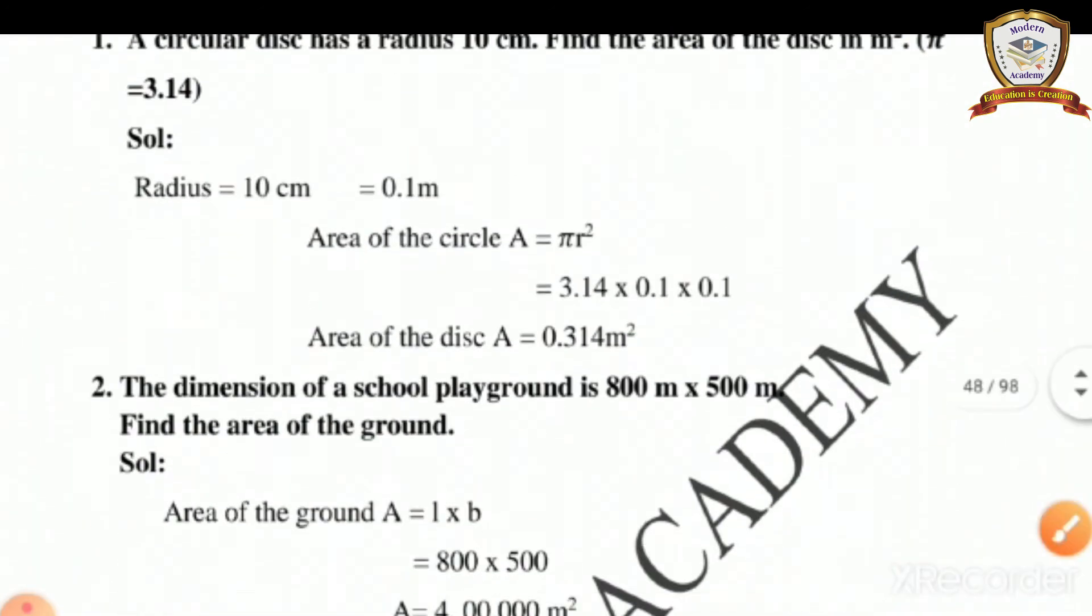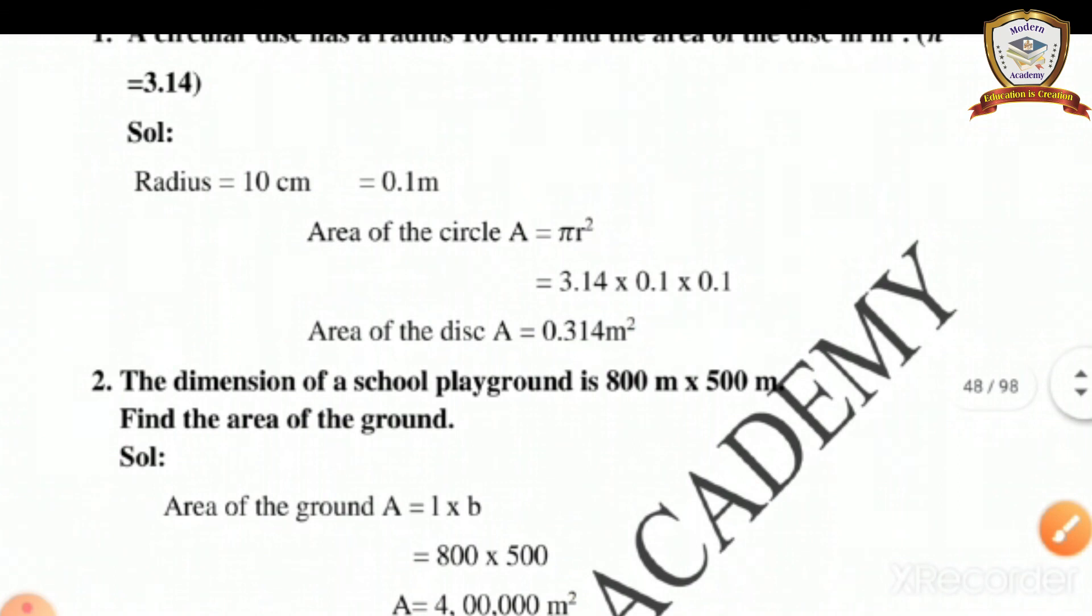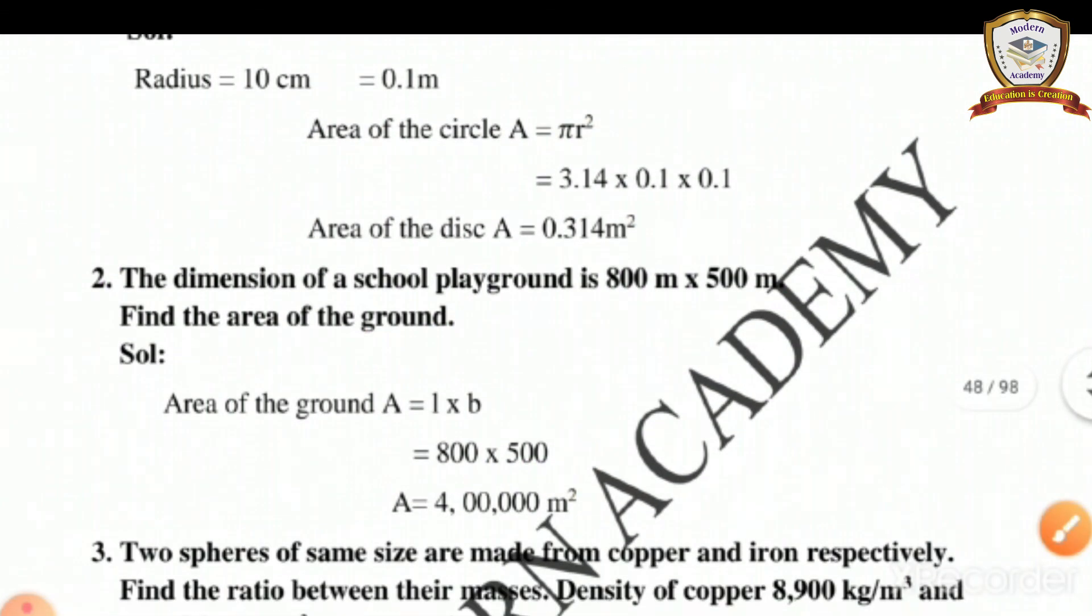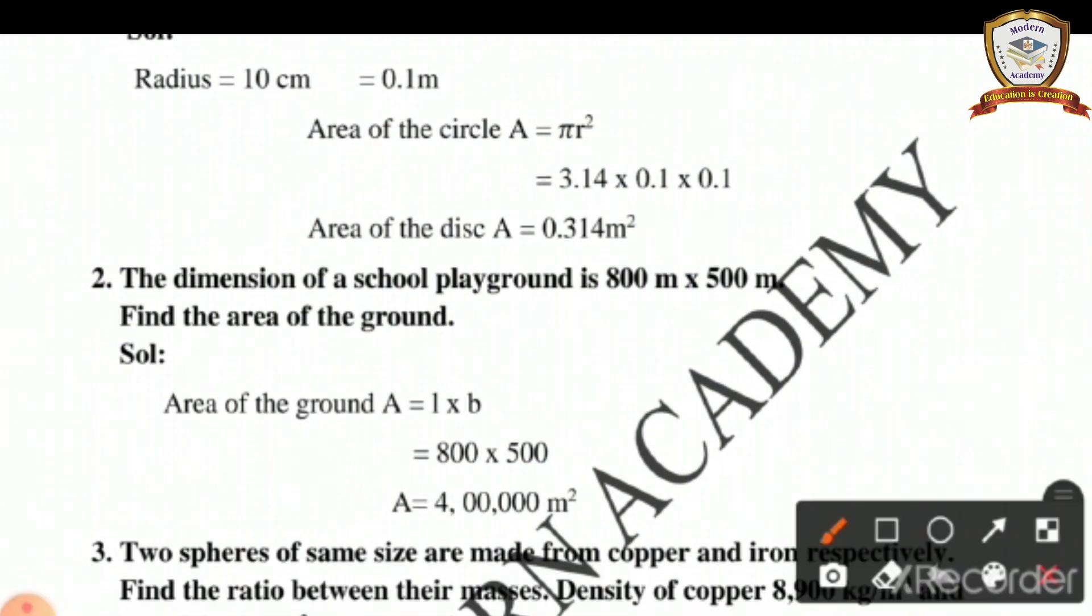The dimension of the school playground is 800 meter into 500 meter. Find the area of the ground. Area of the ground A = length × breadth. So 800 × 500 = 4 × 10⁵ meter square or square meter.